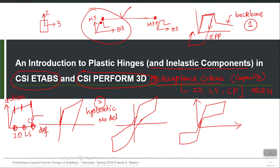Perform 3D is a more general and comprehensive program, so it is not restricted to a particular terminology of performance levels — it allows you to define your own levels. For example, given a backbone curve for a particular plastic hinge, you can set your own levels: level 1, level 2, level 3, level 4, and level 5 — as many as five performance levels — and give them your own names.